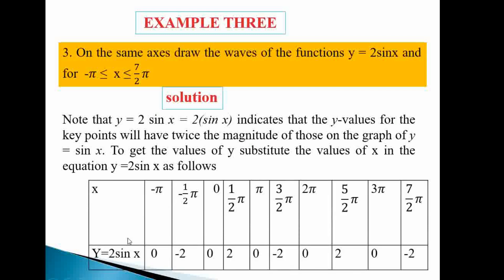Substituting the x-values — negative π, negative π/2, 0, and so on — into degrees: 2 sin(−180°) = 0, 2 sin(−90°) = −2. Filling the table gives y-values: 0, −2, 0, 2, 0, −2, 0, 2, 0, −2, and so on.